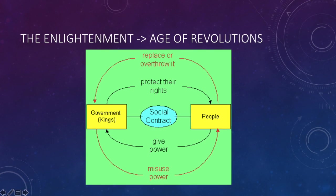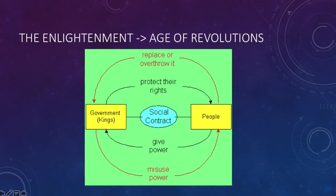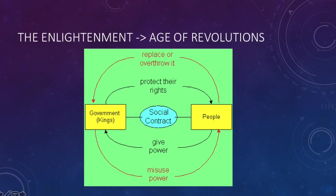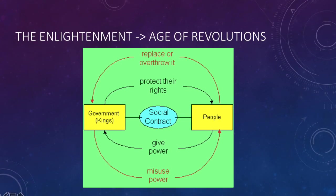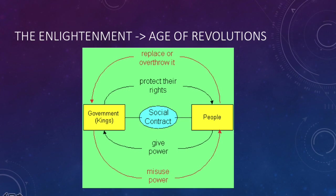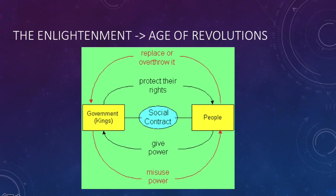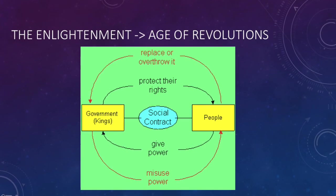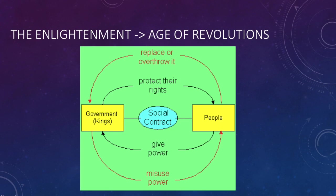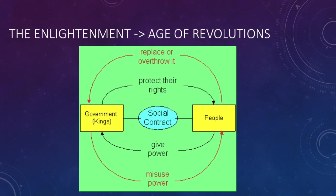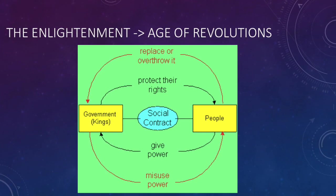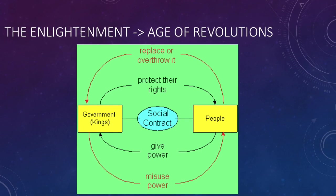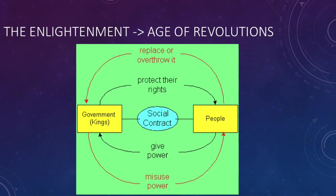We talked about the origins of the Enlightenment at length in this class. There's going to be a video description about the origins of the Enlightenment to help you remember this, but we're especially interested in the link between the Enlightenment and the Age of Revolutions. So how do Enlightenment ideas, such as the social contract theory, contribute to the Age of Revolutions?